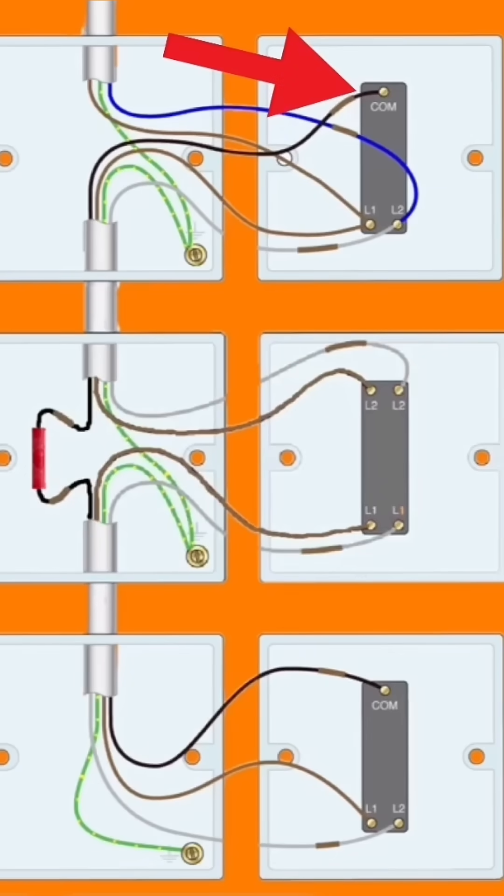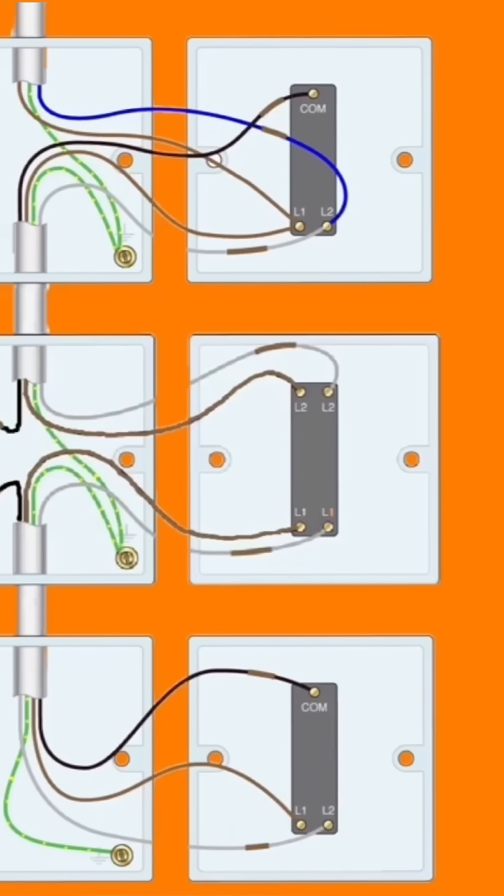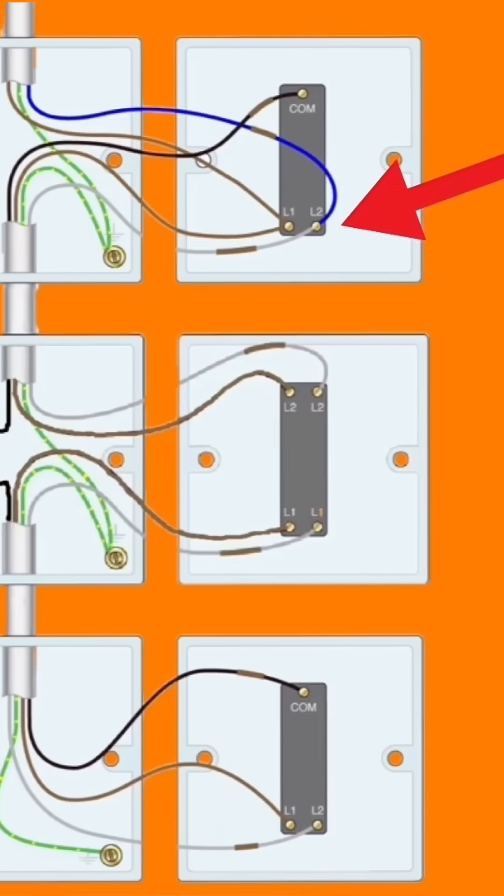We're using black as common, and then we've got brown and brown in our one one from the twin and CPC and one from the three core. We've got a blue with a brown sleeving and a gray with a brown sleeving coming out the other connection within the two-way switch.